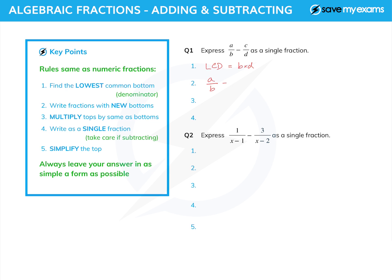So a over b minus c over d can be written as something over bd minus something else over bd. How do we find the tops? We just multiply by the same as we've multiplied the bottoms. What have we multiplied b by to get bd? Obviously d, so we multiply the top by d as well. And in the second fraction, we've multiplied d by b to get bd, so we multiply the top — c — by b as well.